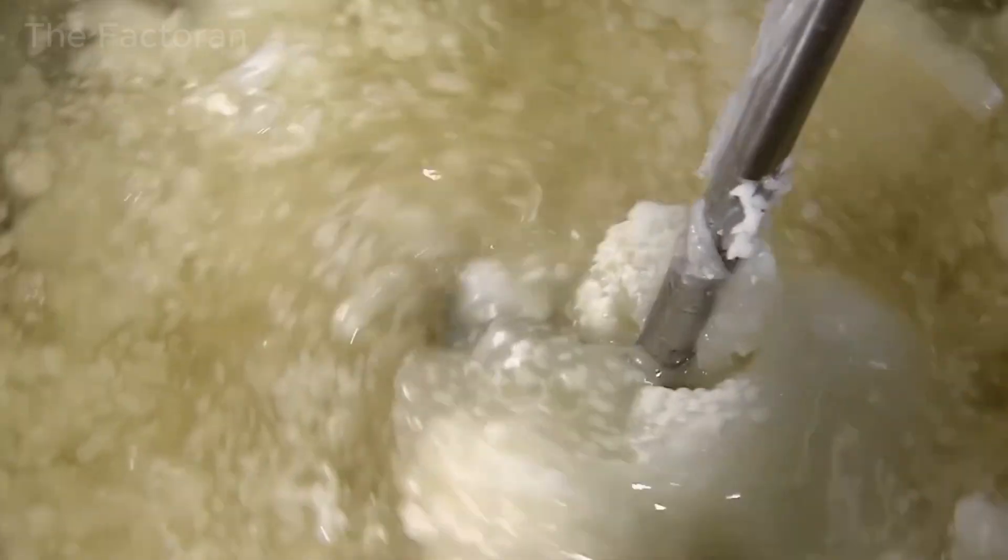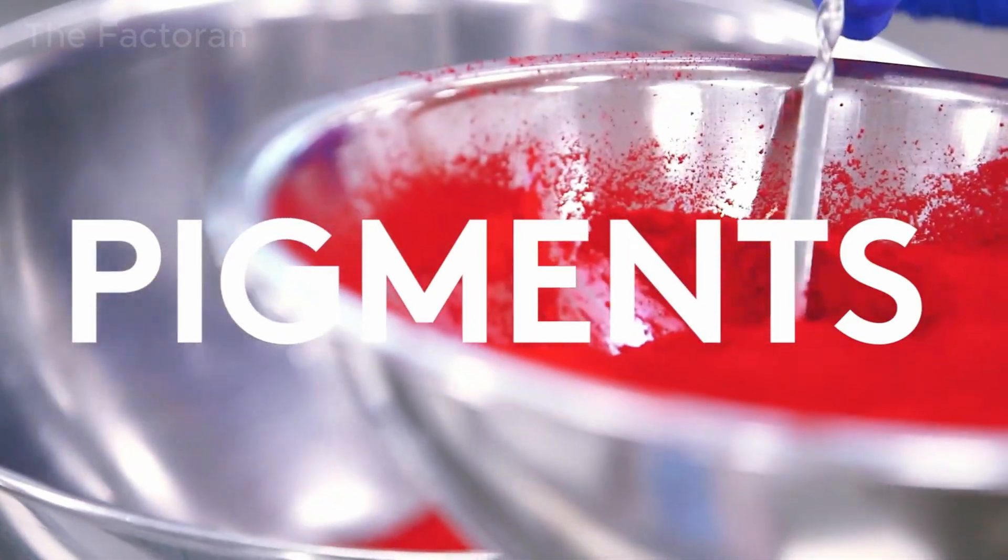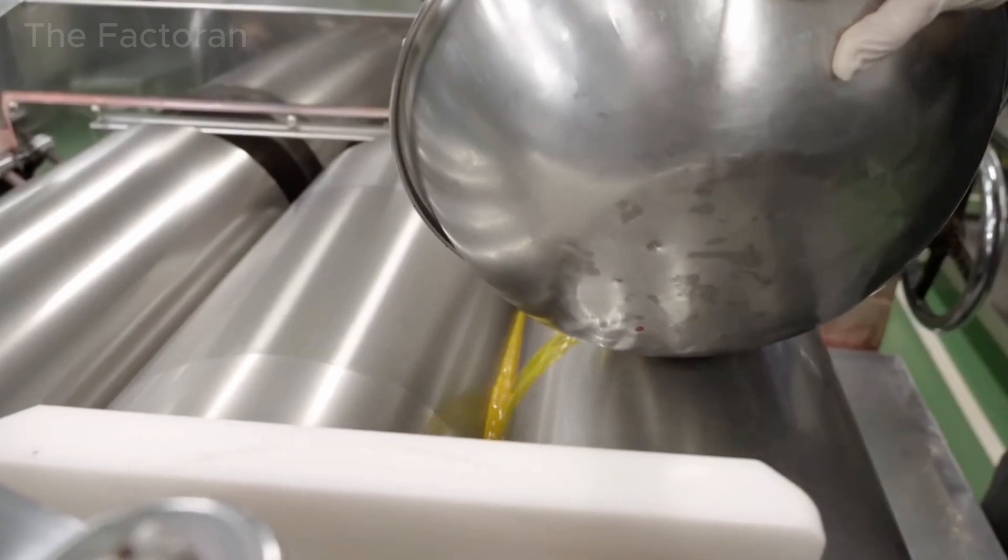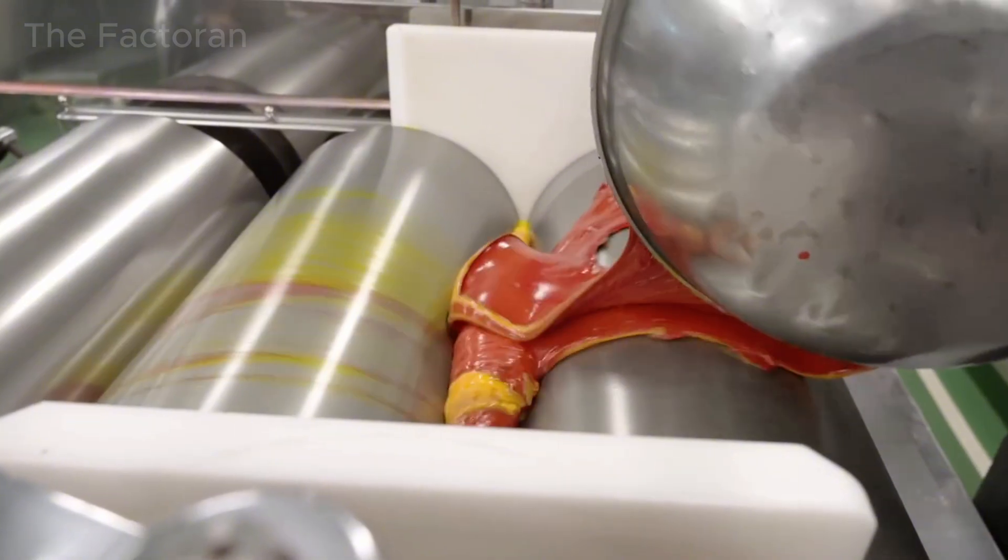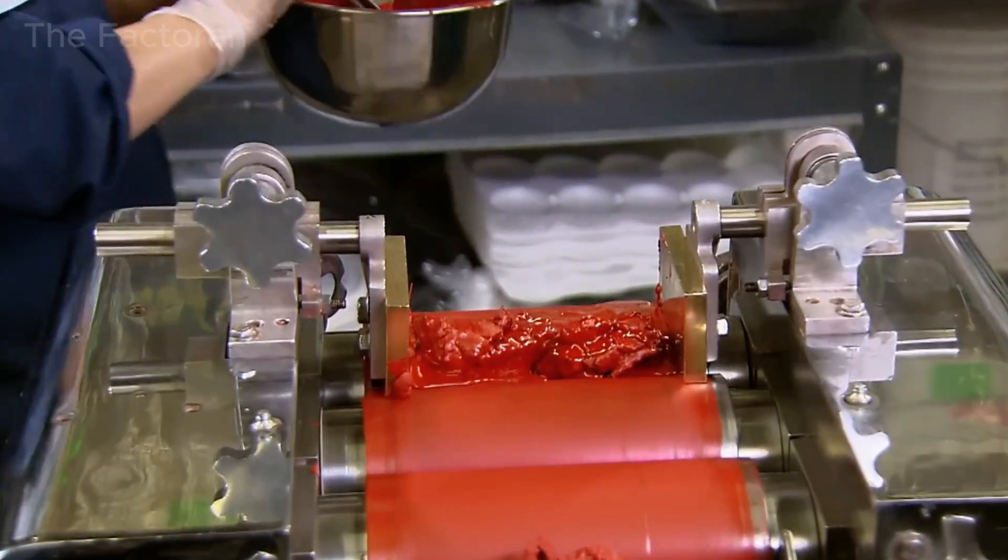Once the lipstick base has stabilized in both structure and viscosity, the process of color control can truly begin. Color pigments cannot simply be poured directly into the base mixture. The pigment particles must first be processed down to an extremely fine size, allowing the color to disperse evenly and preventing clumping when applied to the lips.